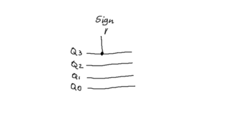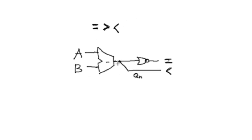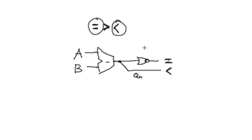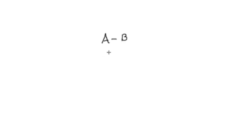That extra bit is your sign signal, also often referred to as a negative signal. Simply by tapping off the most significant bit of our result bus — just taking the topmost bit — we can use that to determine if A is less than B. Using this circuit, we can now determine if A equals B or if A is less than B. So now the only condition left to check is the greater than condition.